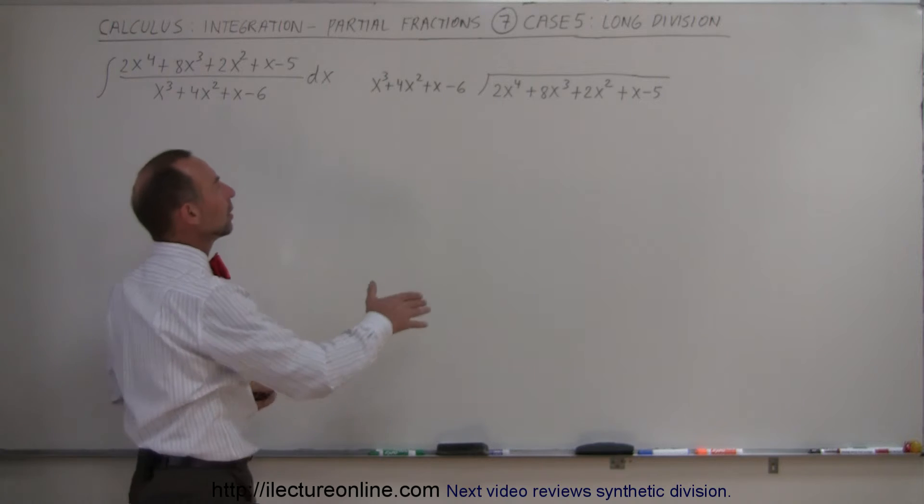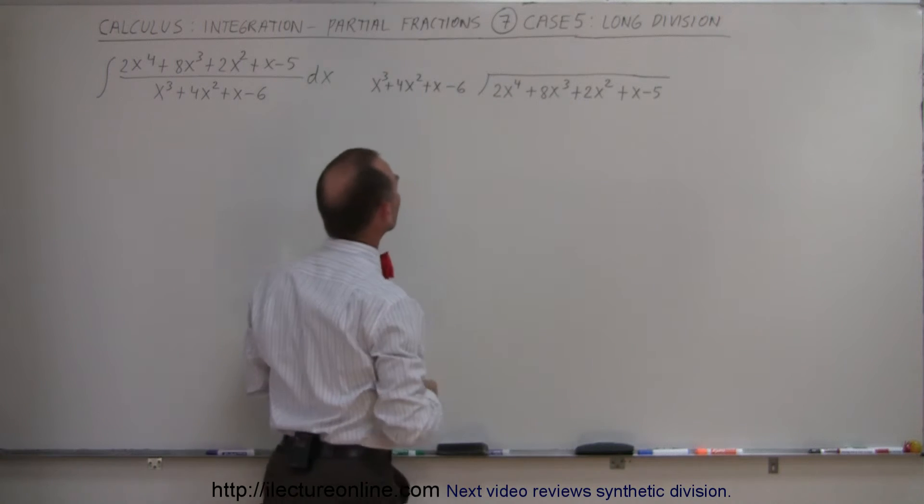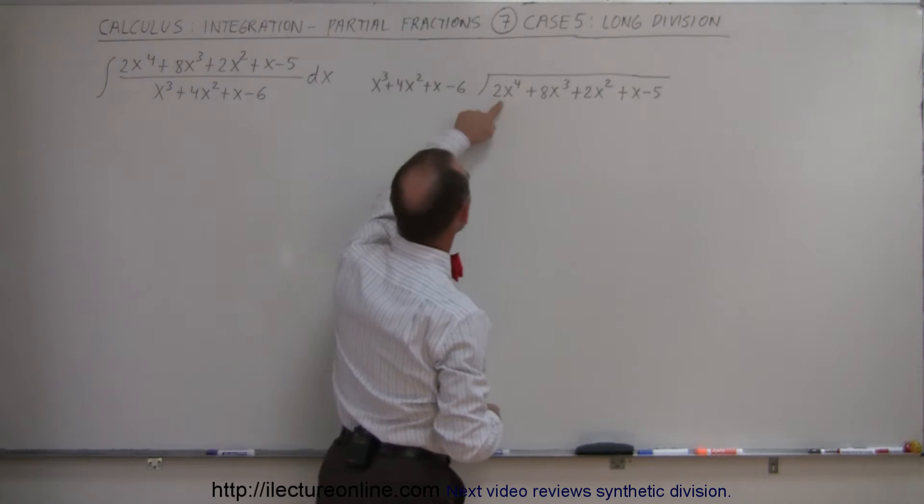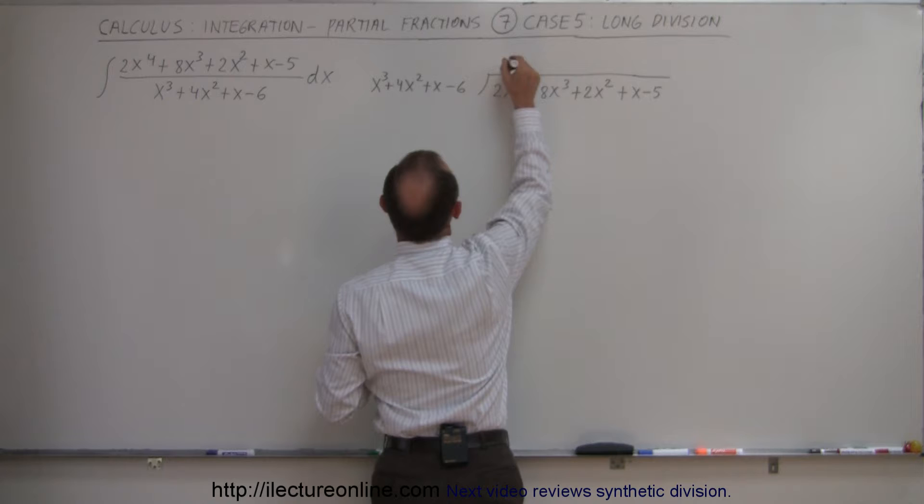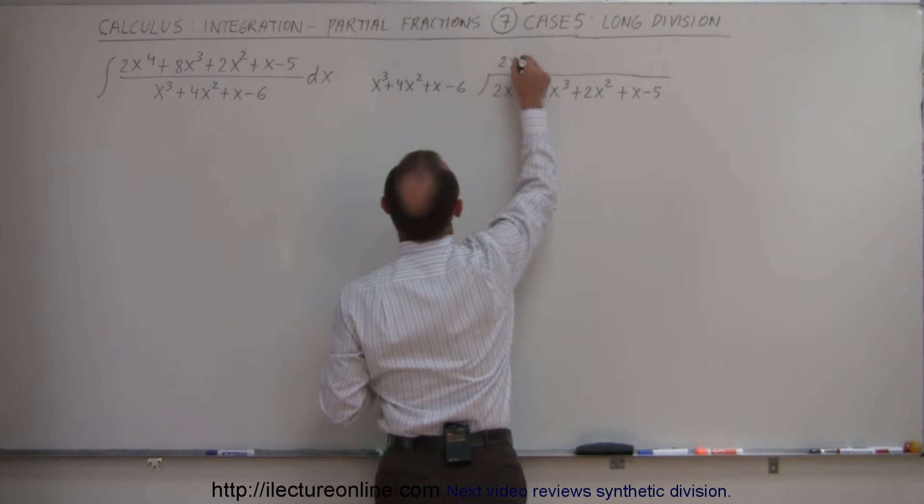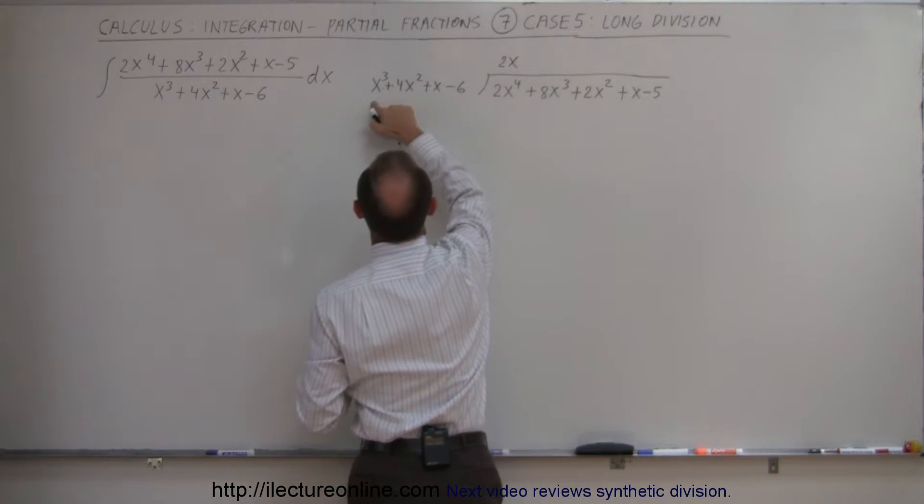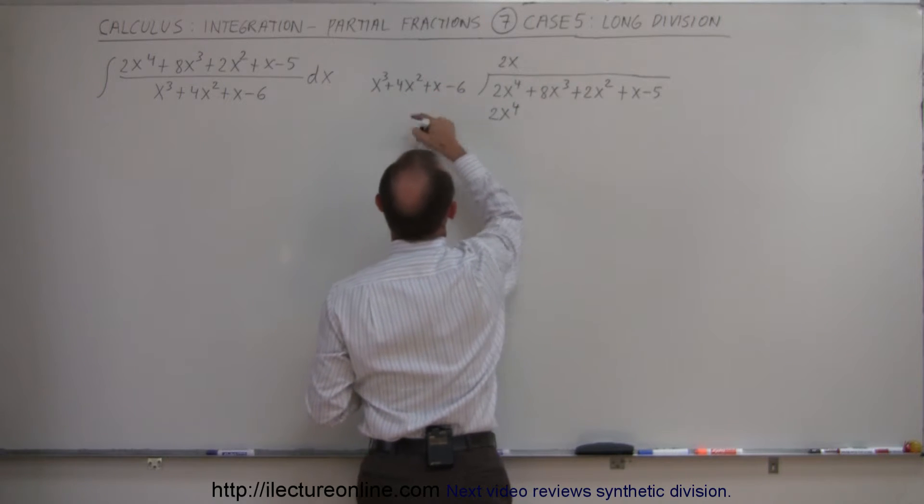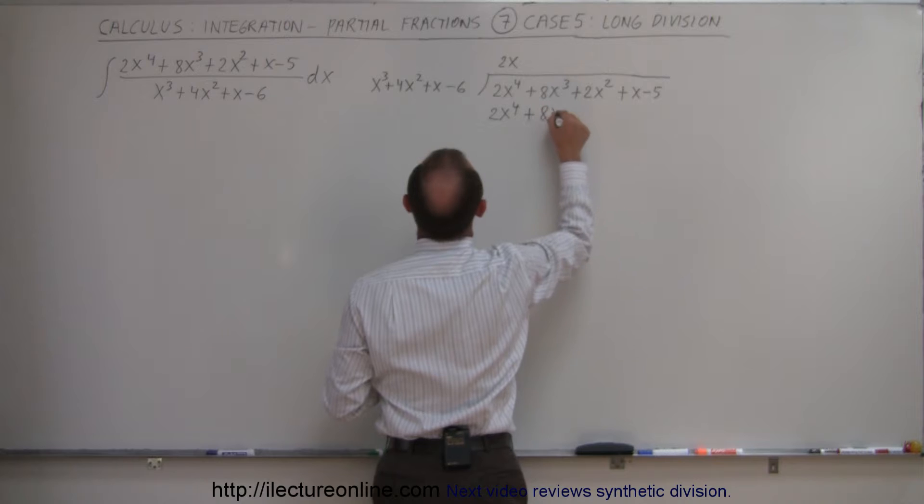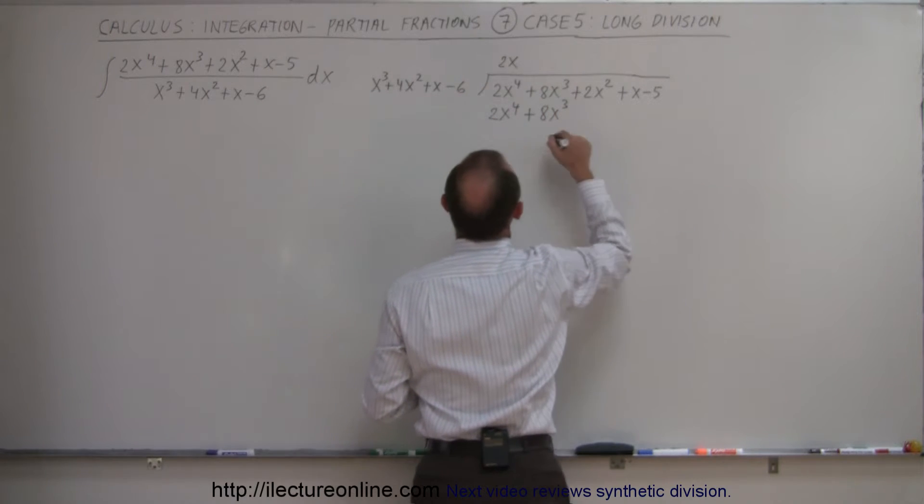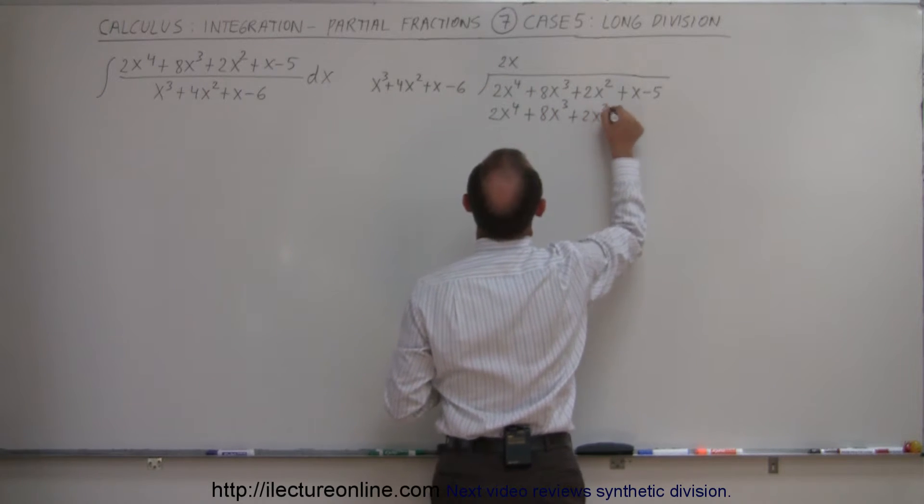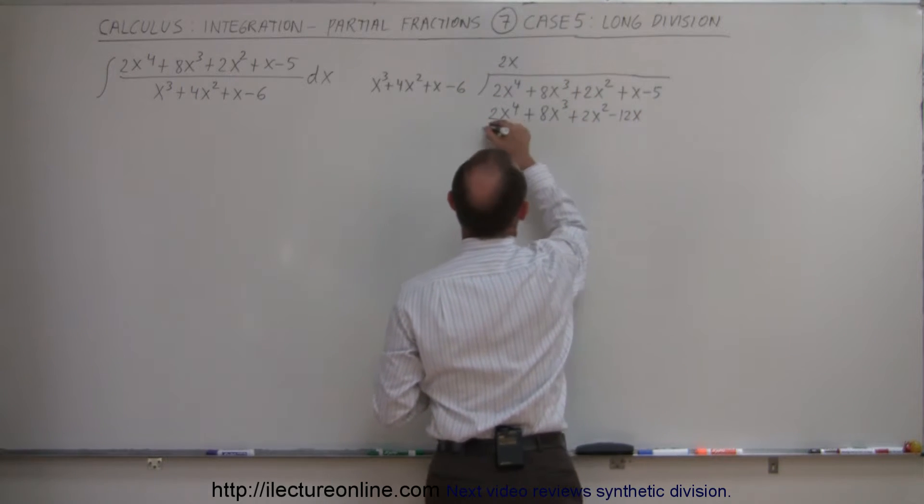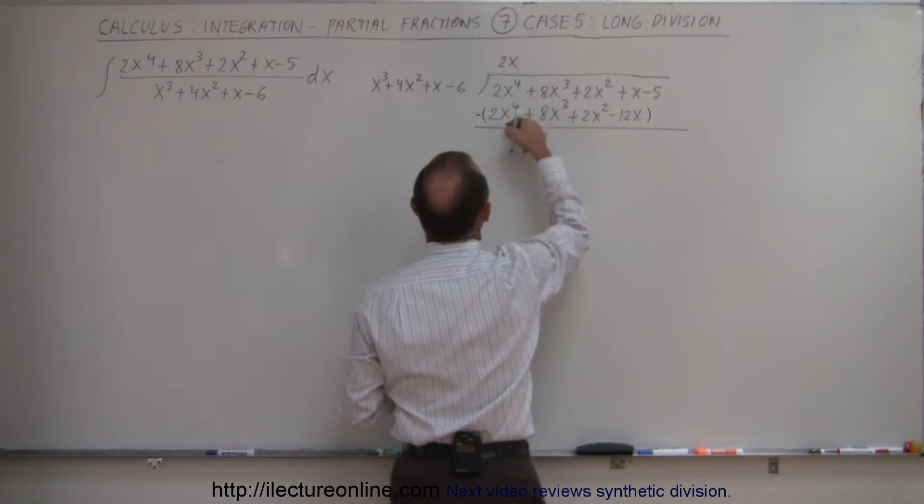So here it is. Here's the numerator. Here's the denominator. We're going to apply long division. So how many times does x cubed fit into 2x to the fourth? Well, that looks like 2x times. Because 2x times x cubed gives me 2x to the fourth. And 2x times 4x squared gives me plus 8x cubed. 2x times x gives me plus 2x squared. And 2x times minus 6 gives me minus 12x. If I then subtract the second row from the first row,